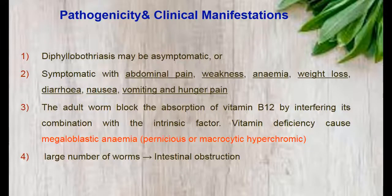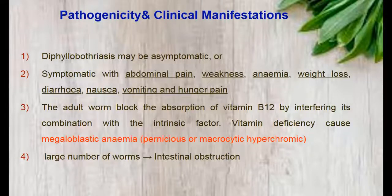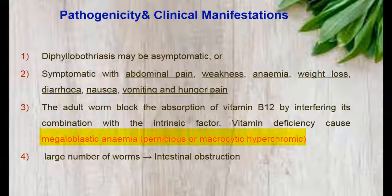Regarding pathogenesis and clinical manifestations, the disease caused by Diphyllobothrium latum is called diphyllobothriasis. The disease may be asymptomatic, or symptoms may include abdominal pain, weakness, anemia, weight loss, diarrhea, nausea, vomiting, and hunger pain. The adult worm blocks the absorption of vitamin B12 by interfering with its combination with the intrinsic factor. This vitamin B12 deficiency causes megaloblastic anemia, which is called pernicious or macrocytic hyperchromic anemia. Vitamin B12 deficiency is a characteristic feature of diphyllobothriasis.